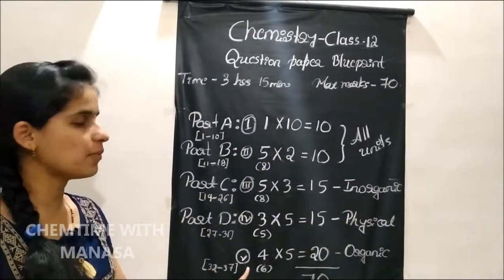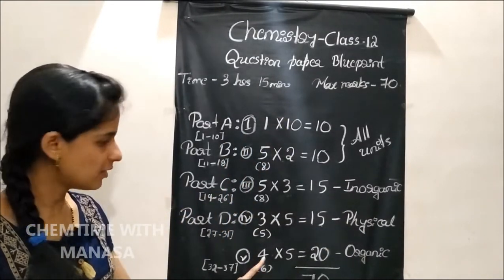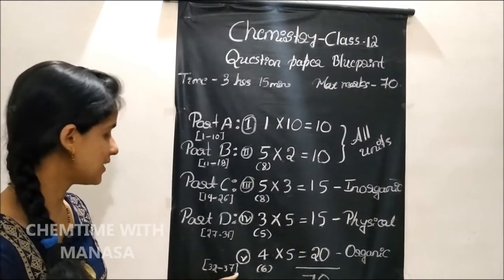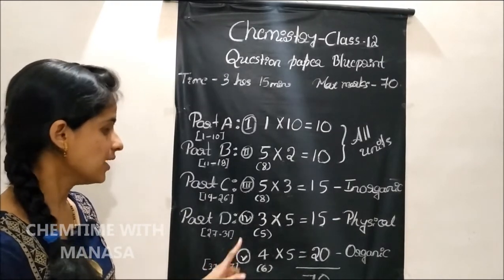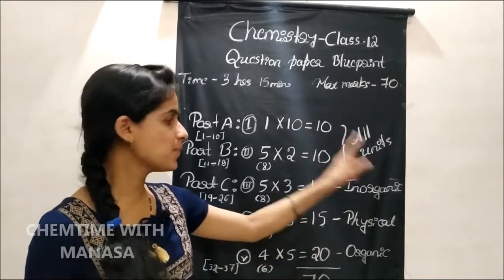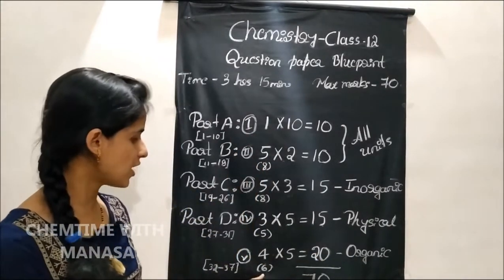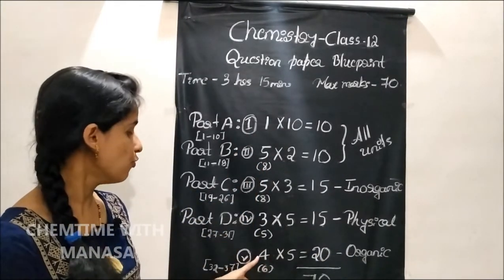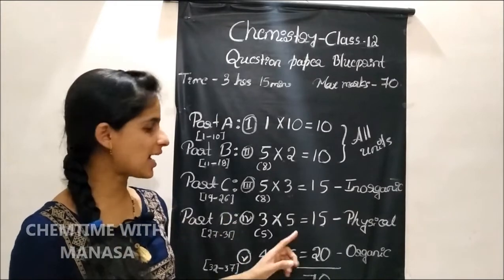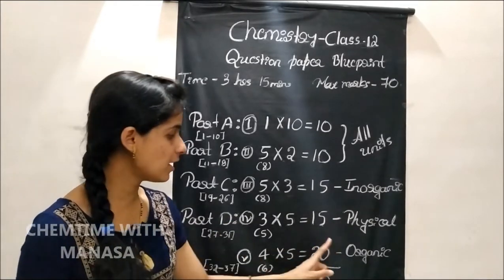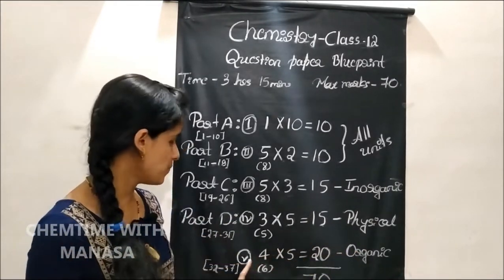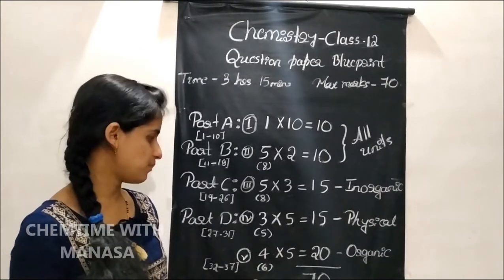Then for main question number 5, there will be 6 questions — question number 32 to 37 — from organic chemistry. Out of 6, you have to write answers for 4 questions. Each question carries 5 marks, so totally there are 20 marks from main question number 5.